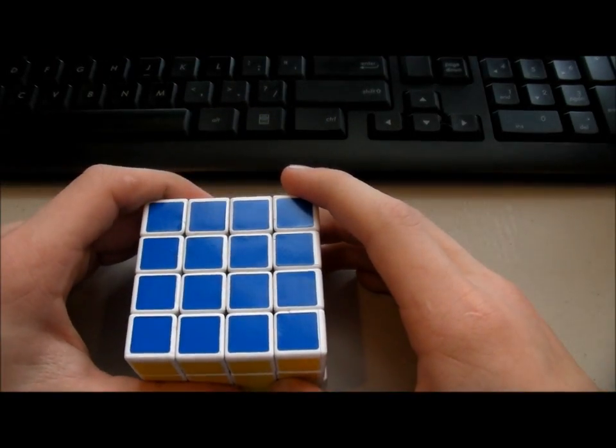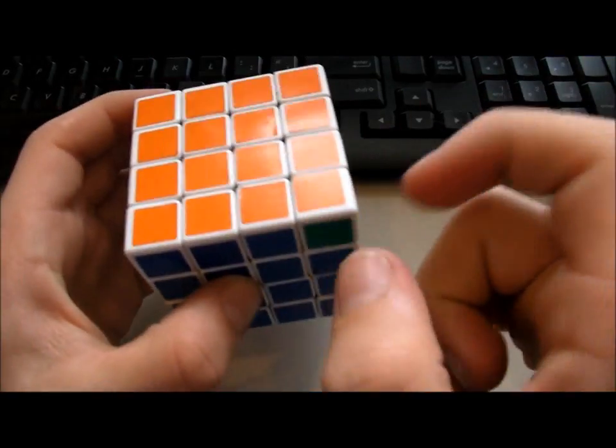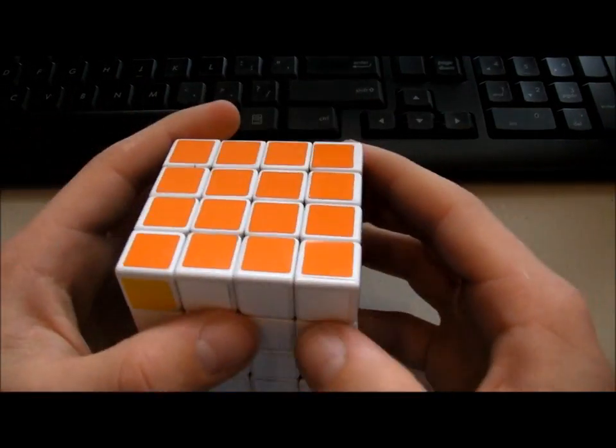All right, so let's get started. All right, so for the first parity alg where these two corners need to be swapped, you can use the N-perm.